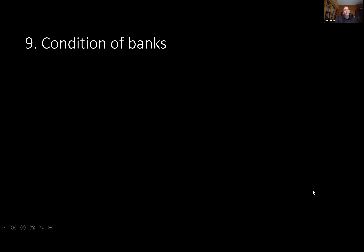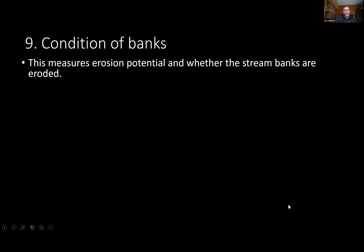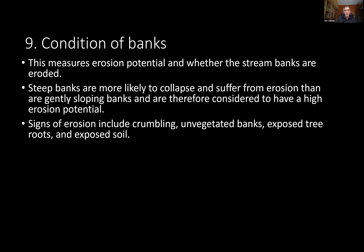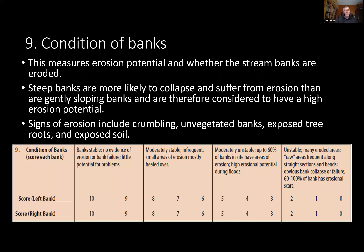The next variable is condition of the banks — the likelihood and degree of erosion. Steep banks are more likely to erode than gently sloping ones. Signs of erosion include crumbling, lack of vegetation, exposed tree roots, and exposed soil. We assess whether banks look stable, moderately stable, showing evidence of erosion, or showing lots of evidence of erosion.